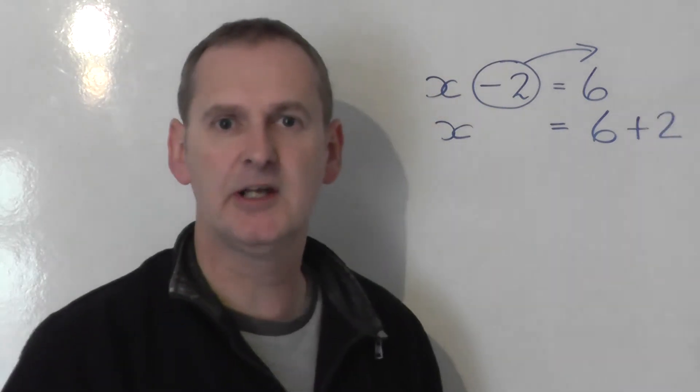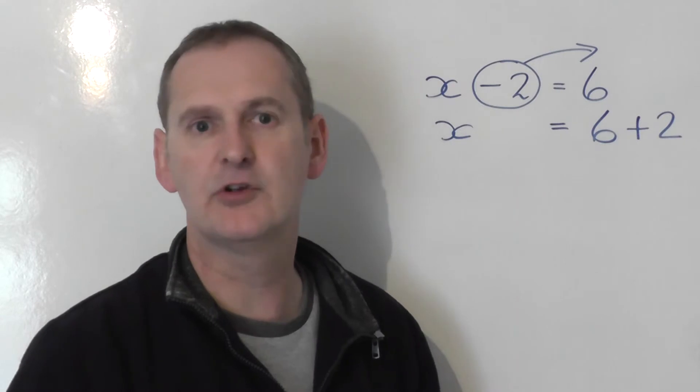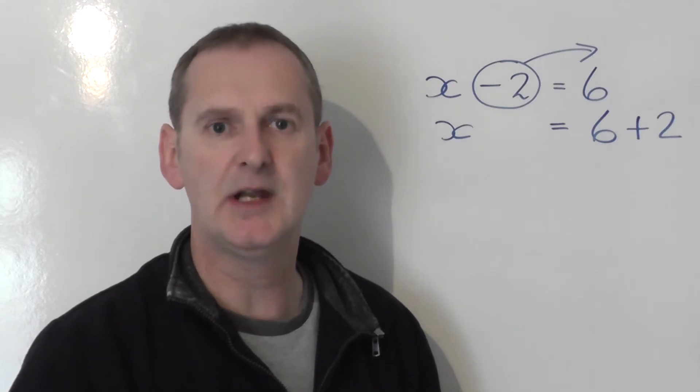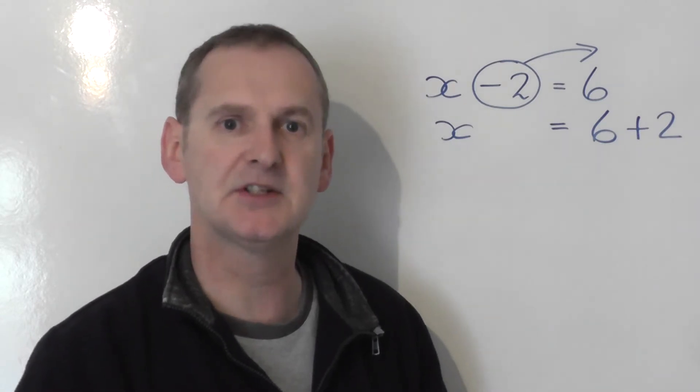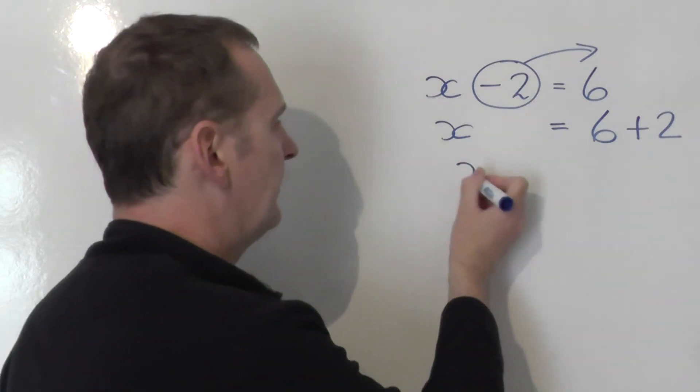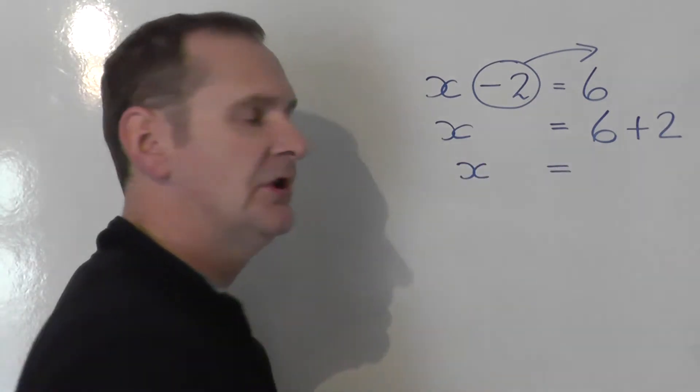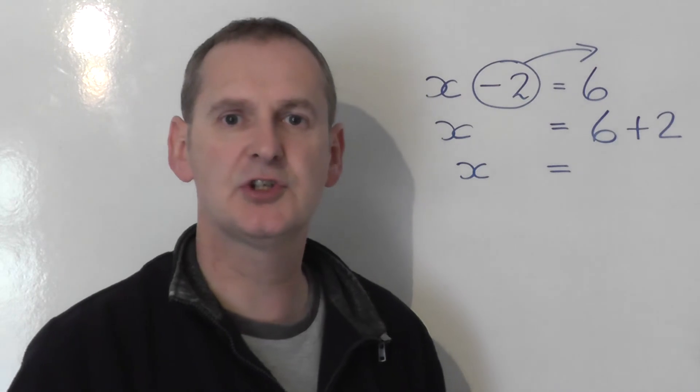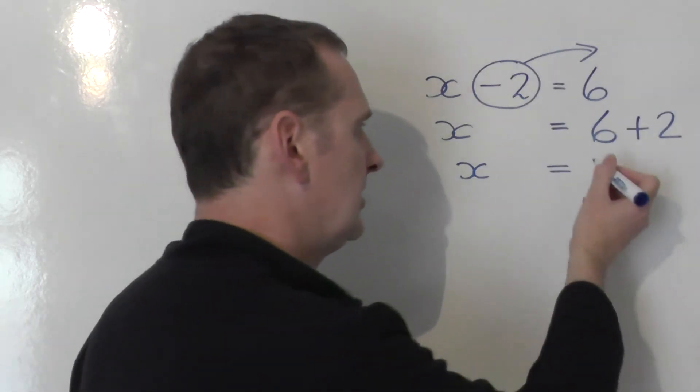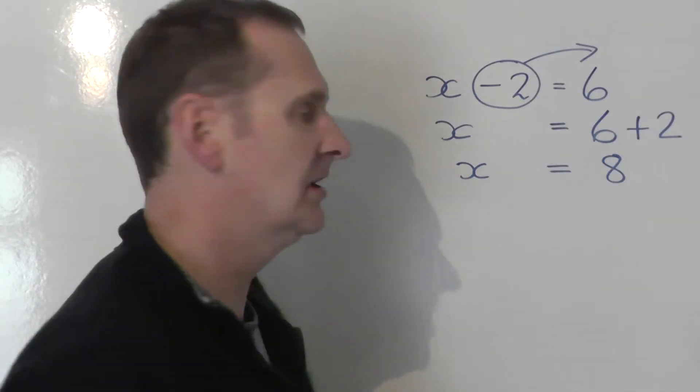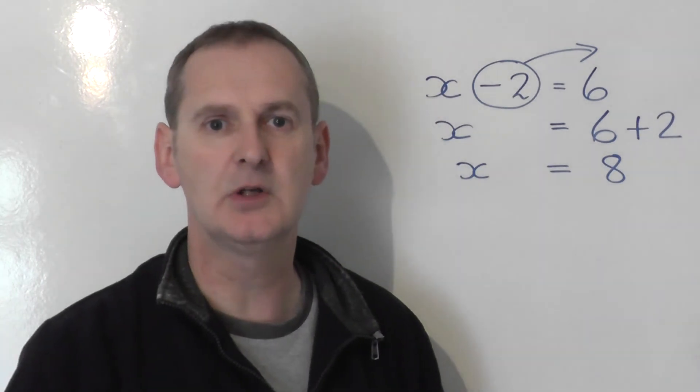So on the left-hand side we've got x, and on the right-hand side we've got 6 plus 2. We now simply work out the right-hand side. So on the left we have that x must be equal to 6 plus 2, which of course is 8. And there is the solution to x minus 2 equals 6.